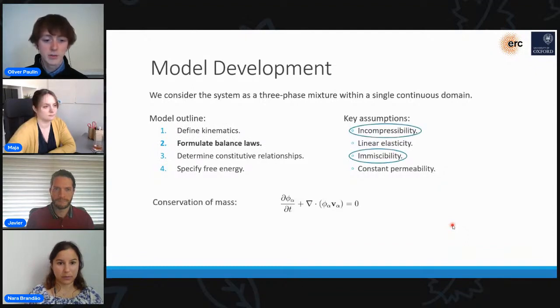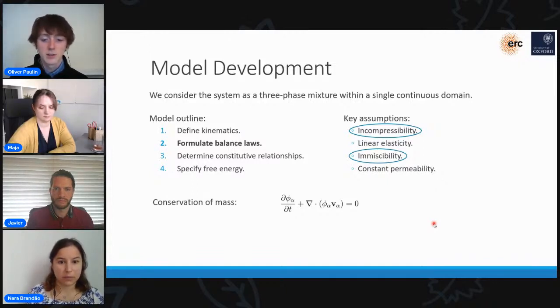In order to formulate balance laws between these different volume fractions, we start by considering conservation of mass, which you can see here. Because of the incompressibility assumption we've made, the density just cancels out of this equation. And we're also going to make the assumption that the gas and the liquid are immiscible. So the gas can't dissolve into the liquid or exsolve out of it, which just means there are no source or sink terms in this equation.